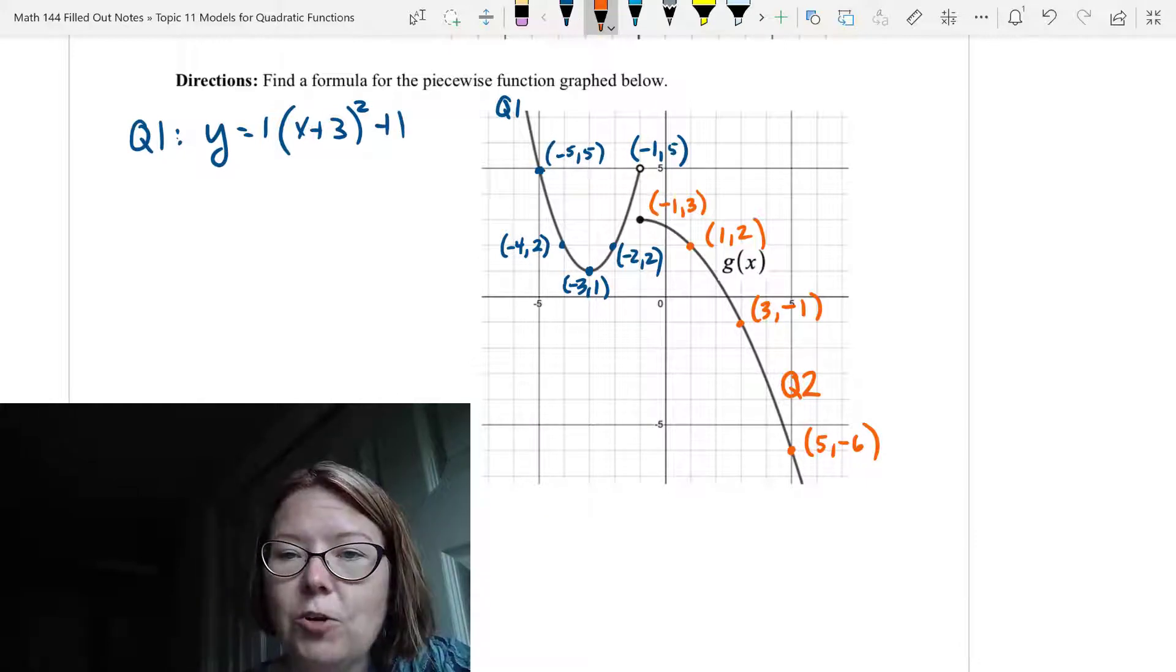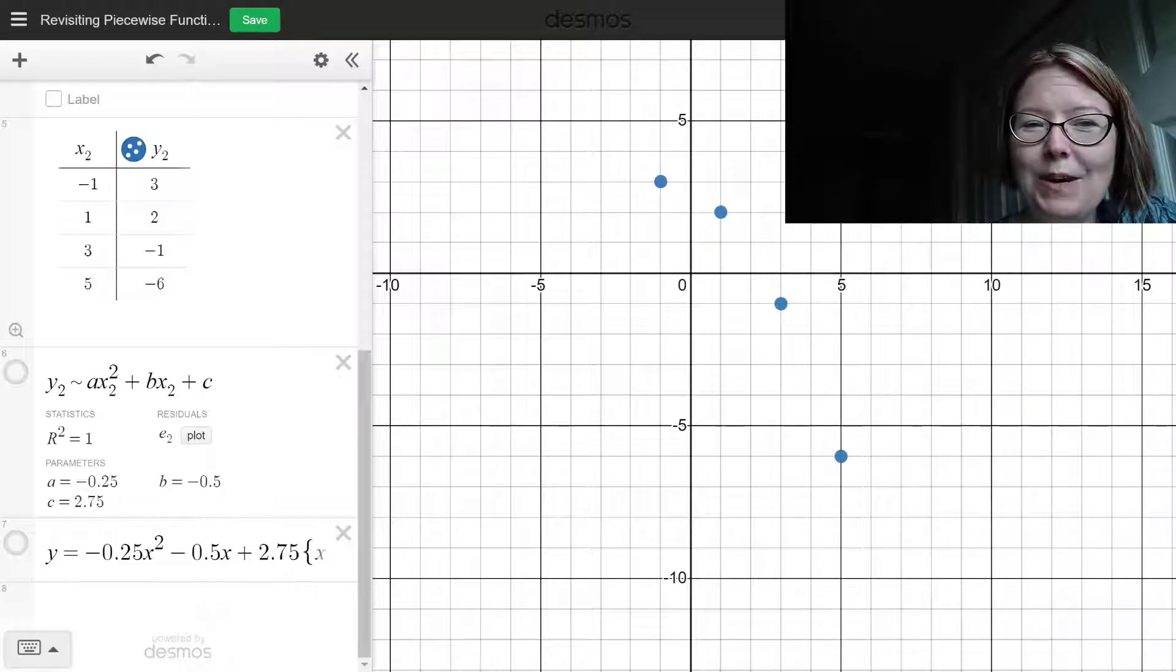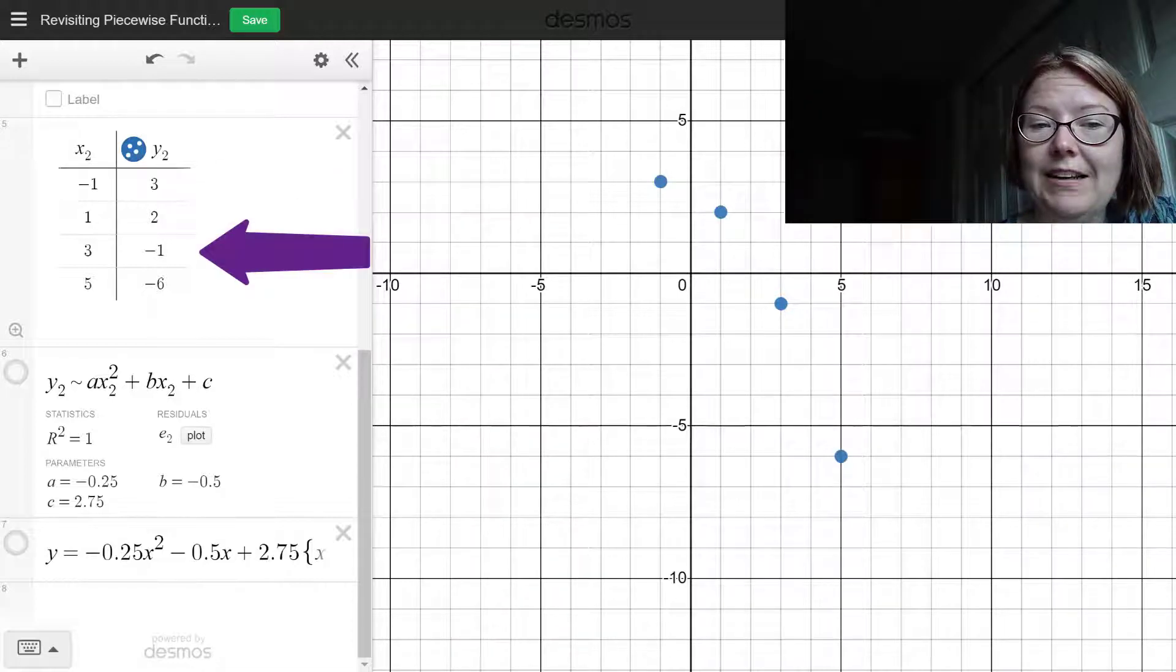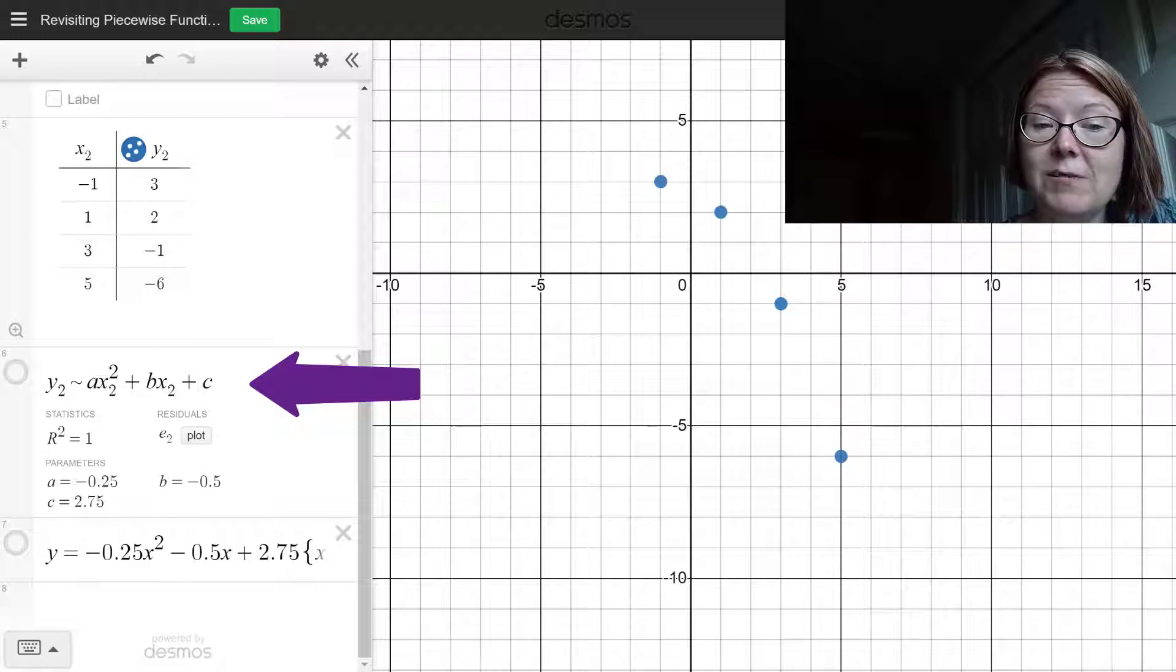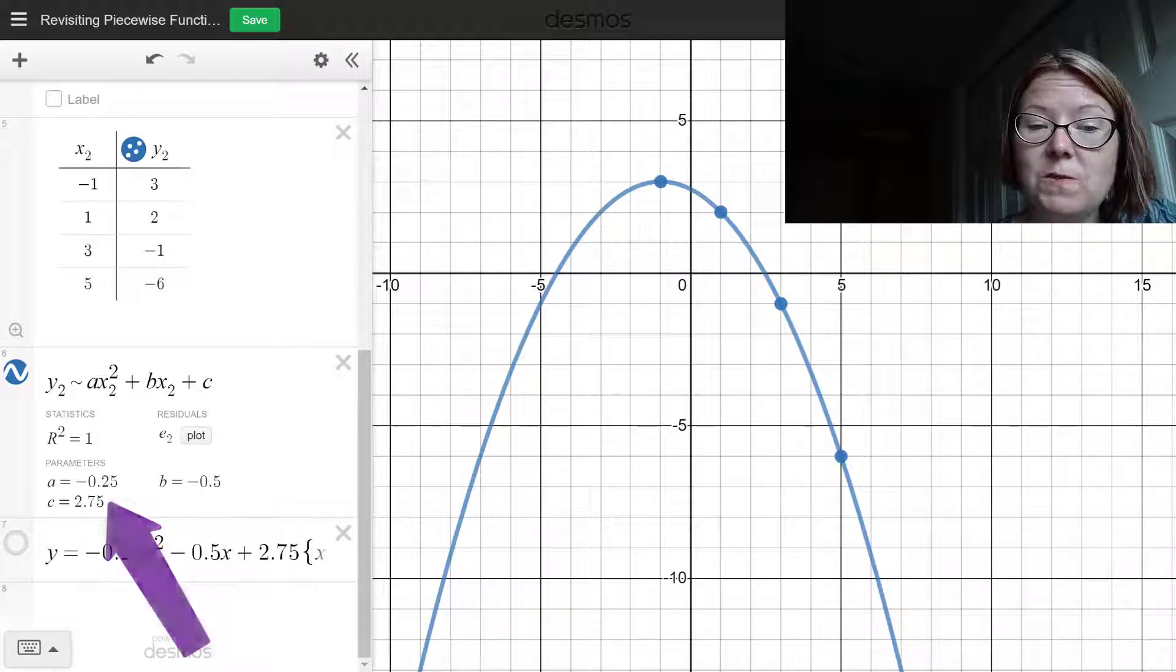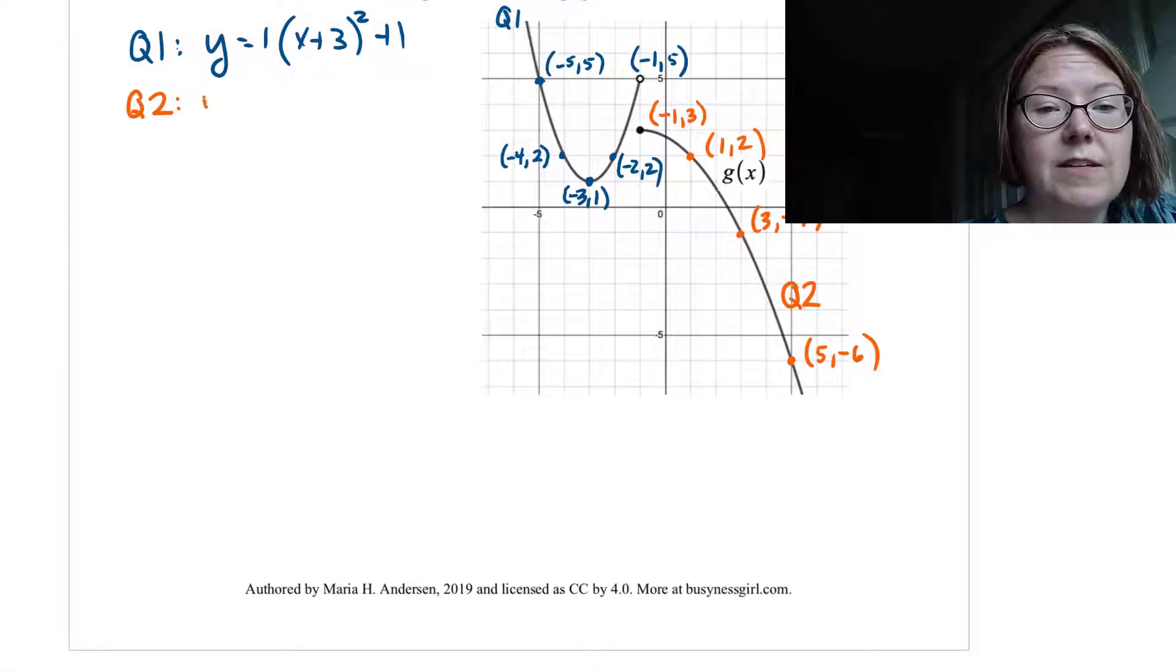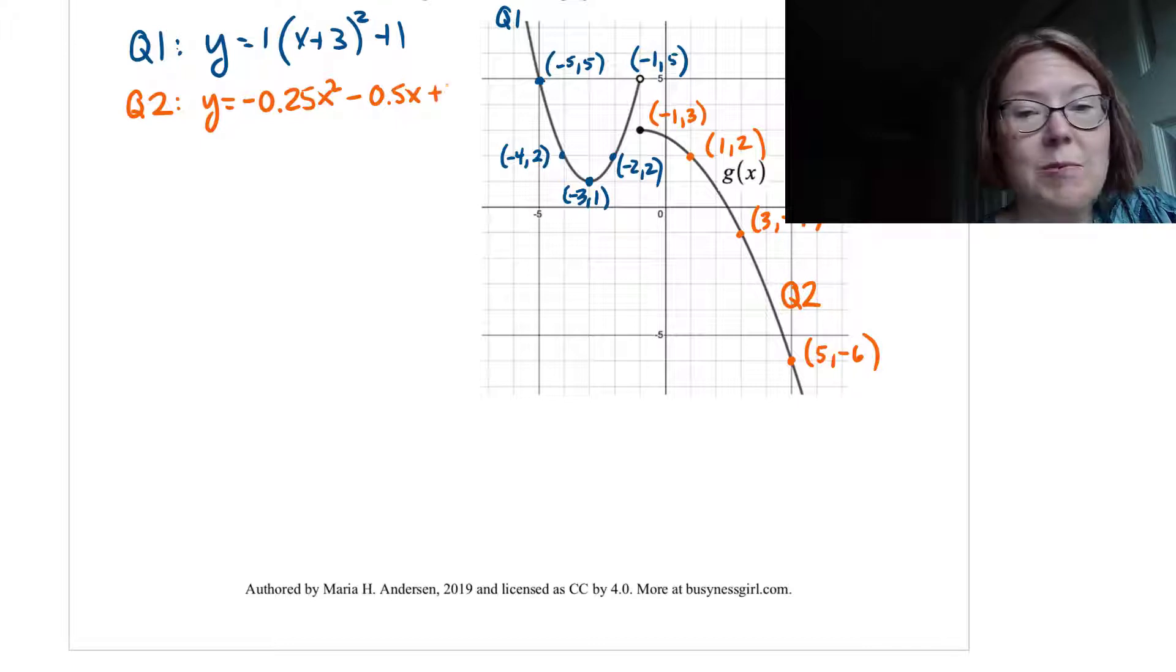Now let's find a formula for Q2. I don't know for sure what the vertex of Q2 is, so I'm going to use the standard form to find the regression. I have another table with x₂ and y₂ as my header row, and going line by line I have (-1, 3), (1, 2), (3, -1), and (4, -6). My regression model is going to be y₂ tilde ax₂² plus bx₂ plus c. Don't forget that the x's and y's need to have the same subscripts as the table you're using, and every x in your model needs to have that subscript or you'll get an error. When I calculate this regression, I get a equals -0.25, b equals -0.5, and c equals 2.75. Let's go ahead and write that down. Q2 is y equals -0.25x² - 0.5x + 2.75.